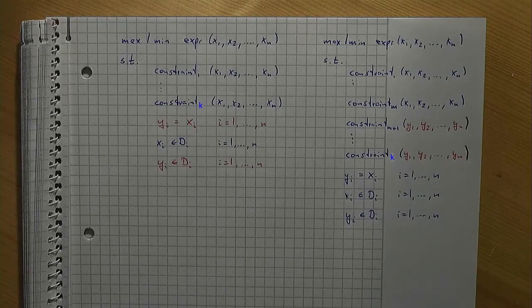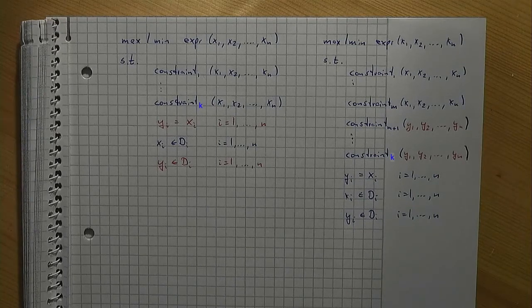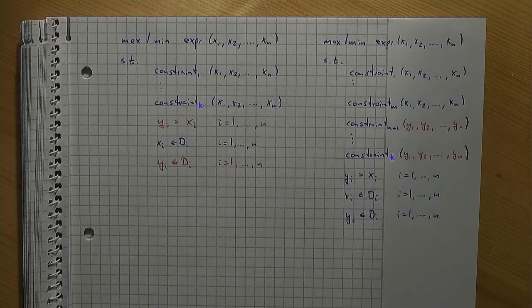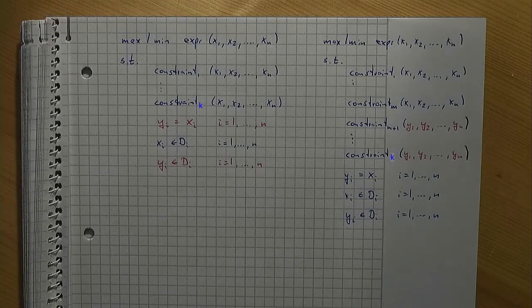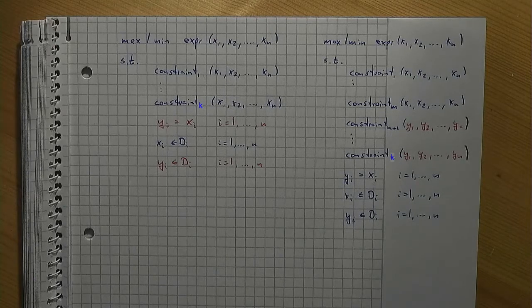Using this model as a start, you can now derive a Lagrangian relaxation by relaxing all the newly added coupling constraints yi equal to xi, as shown in a previous video. This is what we call a Lagrangian decomposition. When doing so, the Lagrangian decomposition consists of two independent parts: one that depends on the x's and one that depends on the y's.